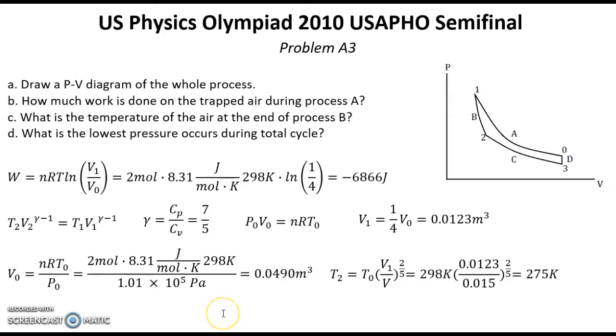Now question D: What is the lowest pressure that occurs during the total cycle? From the diagram we see that the lowest pressure will be in point 3. We can count this pressure in point 3 using the universal gas law: P3V3 equals number of moles multiplied by R multiplied by temperature.